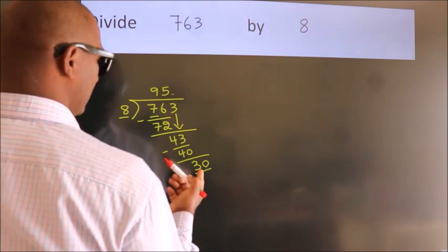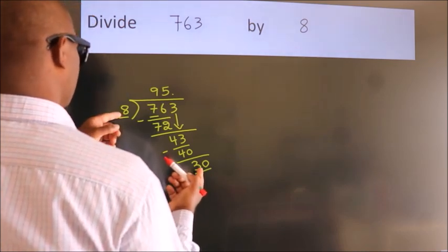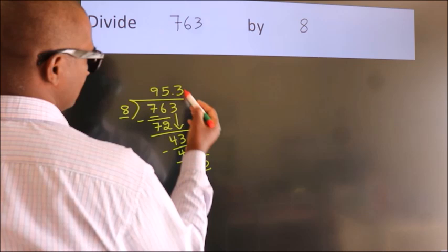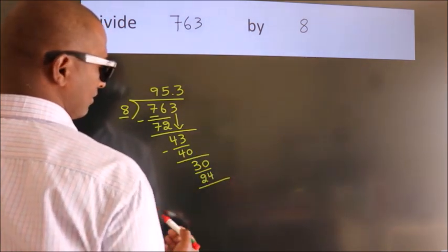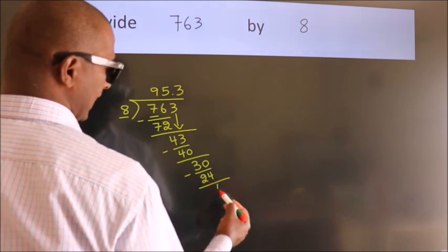A number close to 30 in the 8 table is 8 threes 24. Now, we subtract. We get 6.